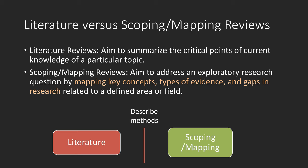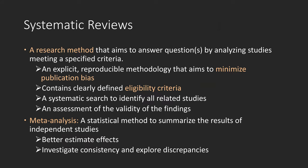When getting to mapping or scoping reviews, you need to describe your methods. Unlike literature reviews and scoping or mapping reviews, systematic reviews is a research method that aims to answer questions by analyzing studies meeting a specified criteria. In other words, this research method will locate and summarize all available evidence for a specific question in order to guide decisions and practices.